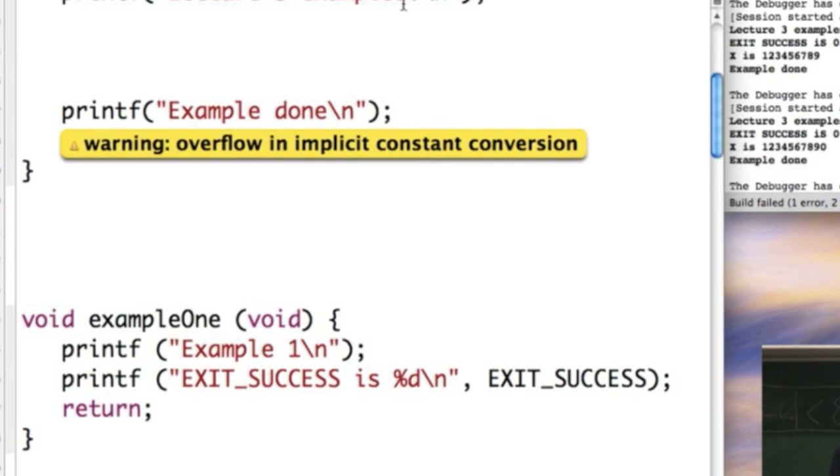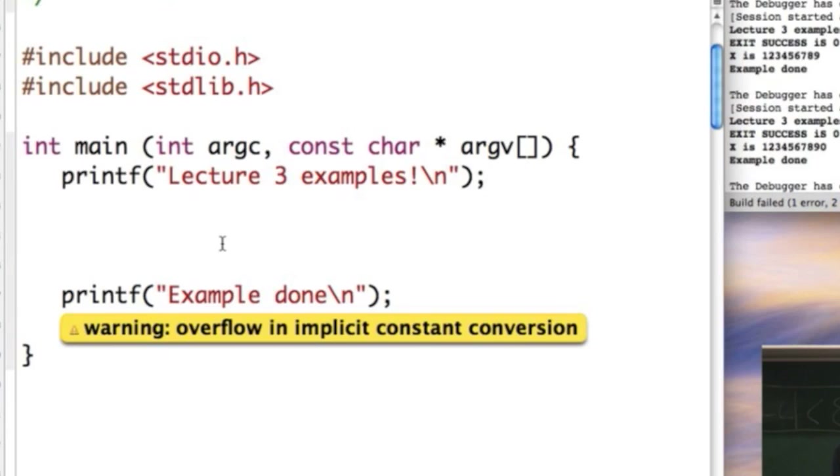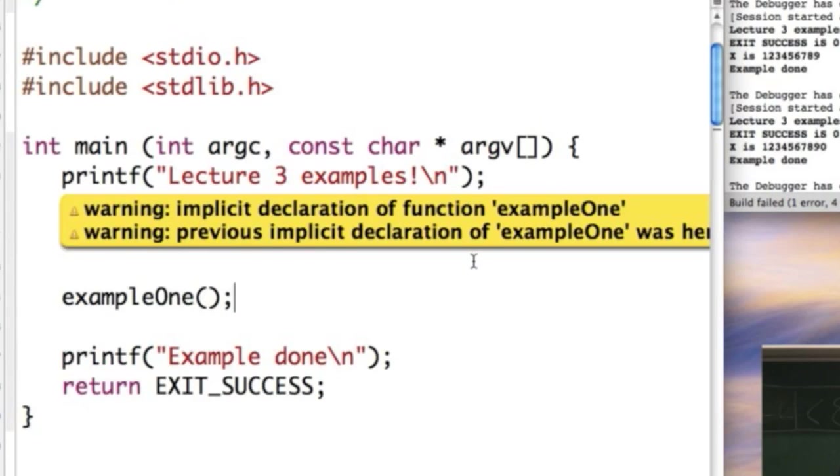All right, so let's run our program now. Example one. Oh, how am I going to call example one? How am I going to make my main function use example one? What do I have to say? I have to say just the name of the function. That's what calls it. Yeah, example one. So the main program is going to print something out. It's going to run example one. It's going to print something out, then it's going to return exit success. All right, let's run the program and see what happens. Oh, implicit declaration of function example one. What does that mean? You've seen that. There's that main error message we get at the moment.